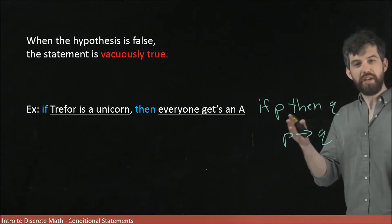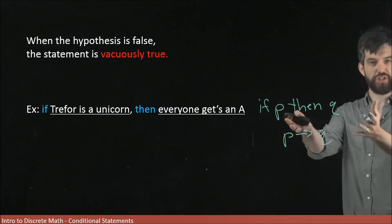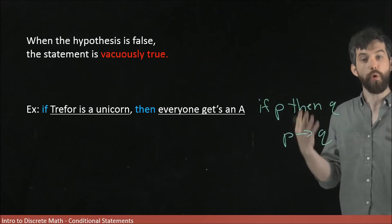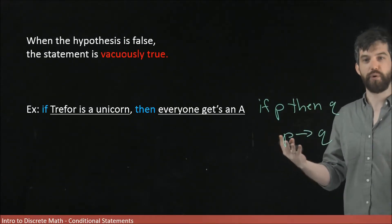Now what we know is that I can turn a conditional like this into a disjunctive, into an or statement of the form not P or Q.